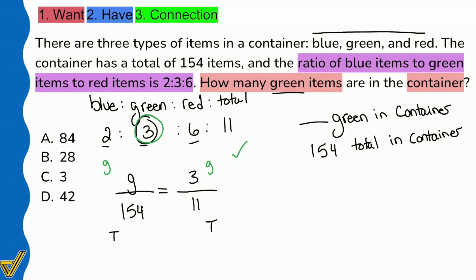We can solve this nice and easy. Cross multiply and divide if we'd like to, or if you notice a comparison that you can make, do your thing. But G times 11, that's going to be 11G. 154 multiplied by 3, that's going to end up being 462.